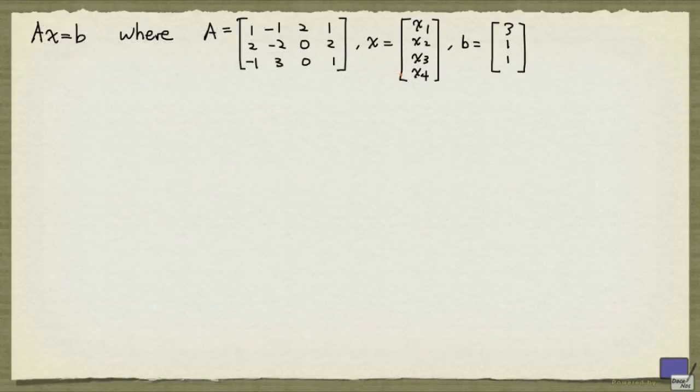We are going to look at the system Ax equal to b, where A is the matrix given here, x is the tuple of variables x1 up to x4, and b is the tuple 3, 1, 1. The augmented matrix for the system is this. And we are going to row reduce this matrix to transform it to a matrix in reduced row echelon form using elementary row operations.